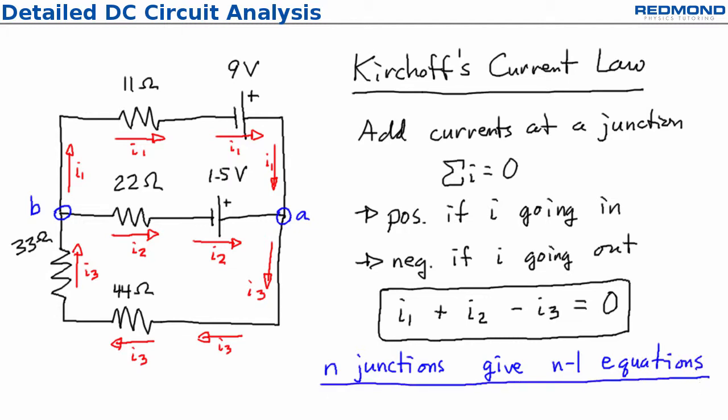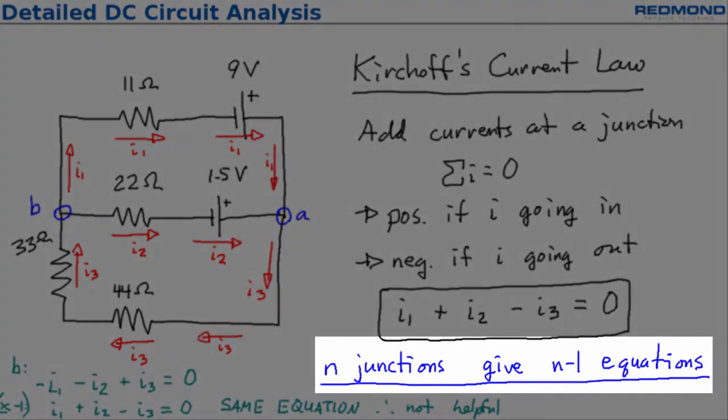A quick check shows this to be true for junction B. I1 and I2 go out, so they're negative, and I3 goes in, so it's positive, and the equation is negative I1 minus I2 plus I3 equals zero. If I multiply that by negative one, I see that it's exactly the same equation that I just got, and it does not help me solve the problem. Remember, n junctions give n minus one useful equations.